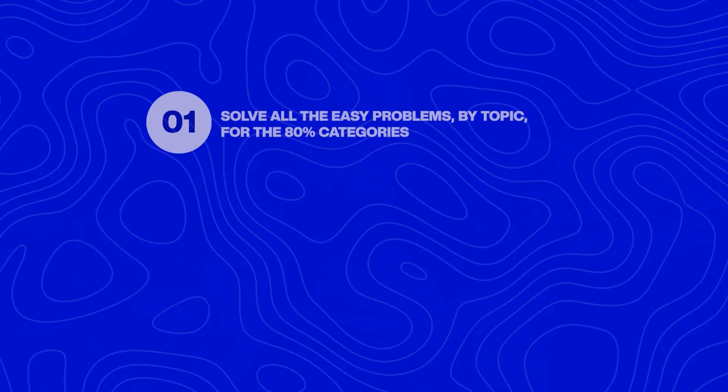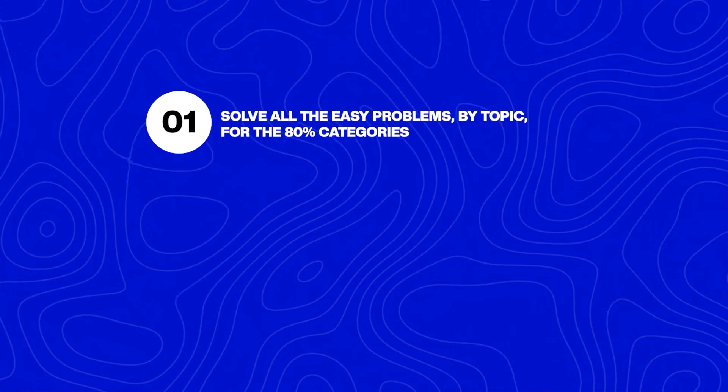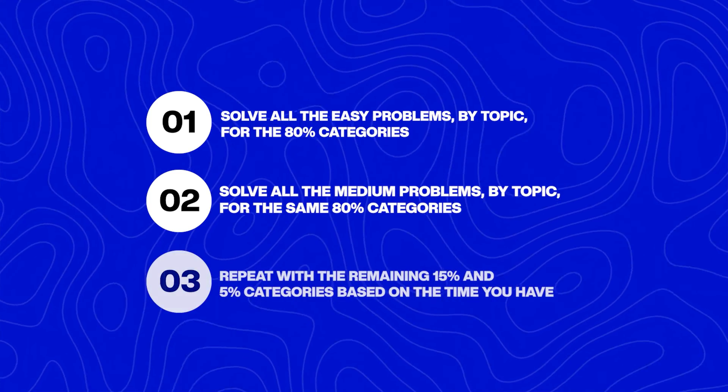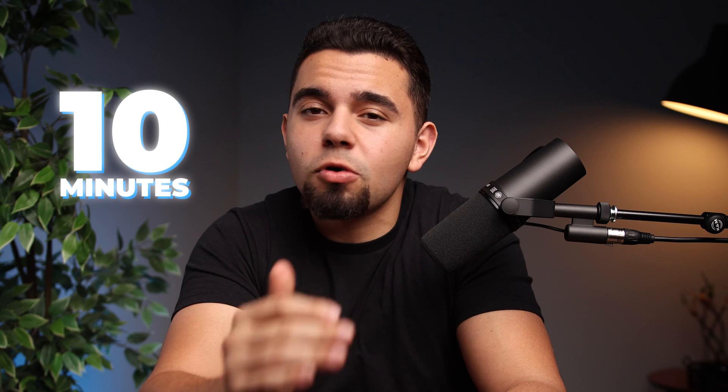To piece these two bits of advice together: go through the easy problems by topic, focusing on that first 80% category, and then do the mediums of that 80% — particularly if you're on a time crunch. You can allocate the time you have accordingly based on this framework. The next really important thing to call out is time management and how to approach solutions. It's critical to limit the time you spend on every single question — no more than 10 to 15 minutes per problem.